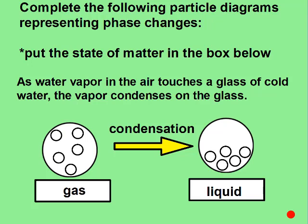For the last problem, you only have five particles to start with, so you should only have five particles in your final product. There should be some space between the particles. Condensation goes from a gas to a liquid, so the particles should be on the bottom half of the circle, not filling the entire container since it's a liquid.